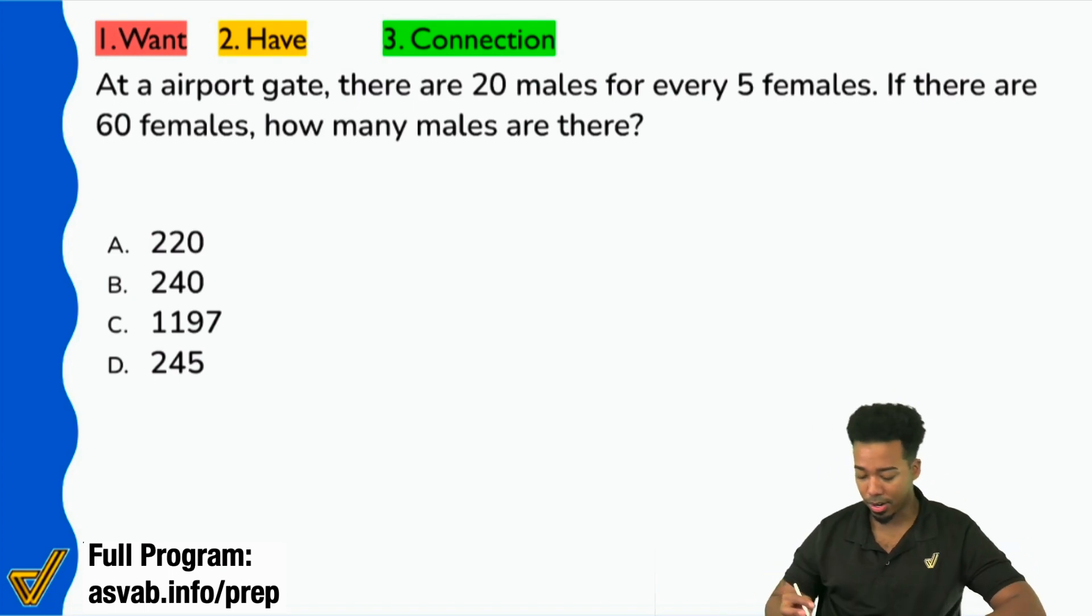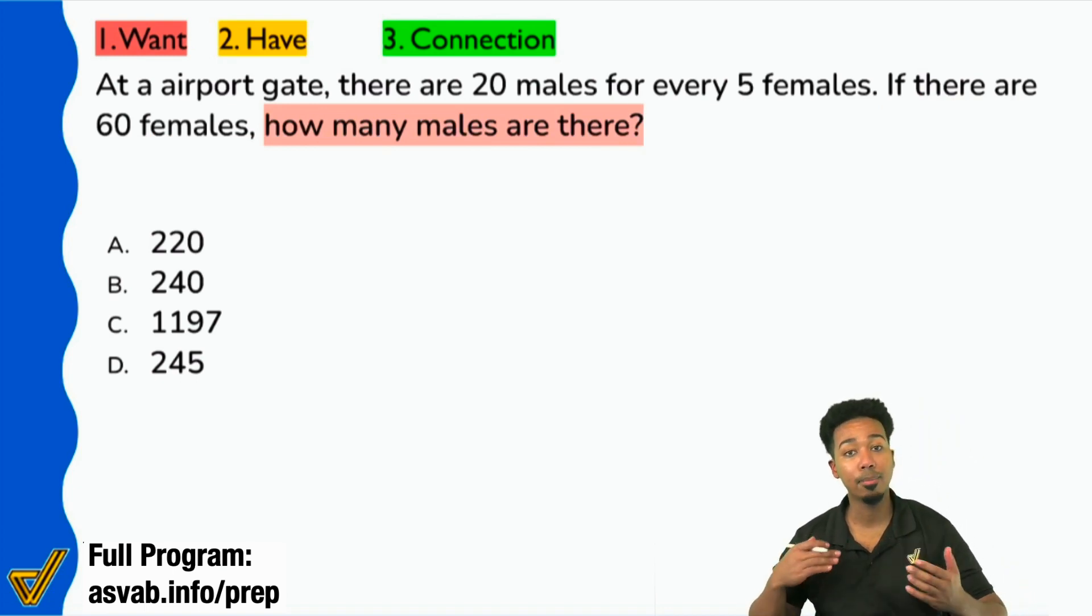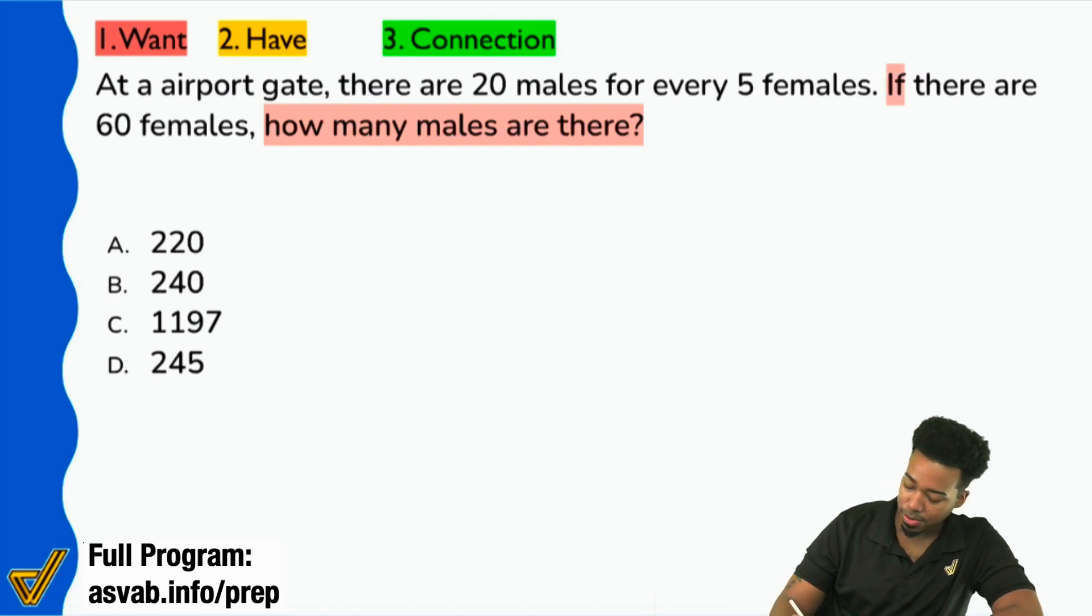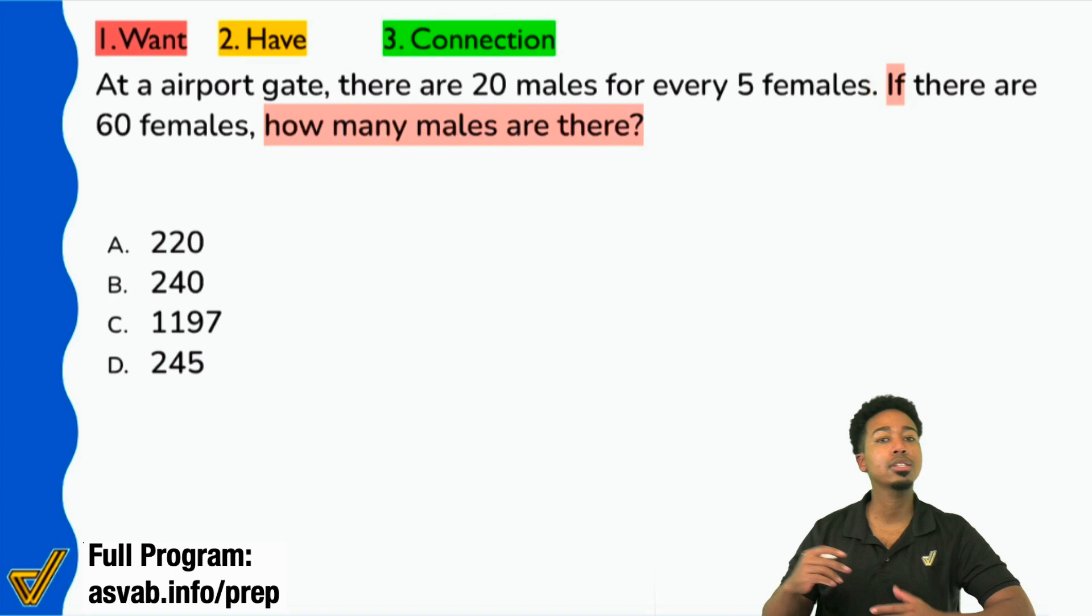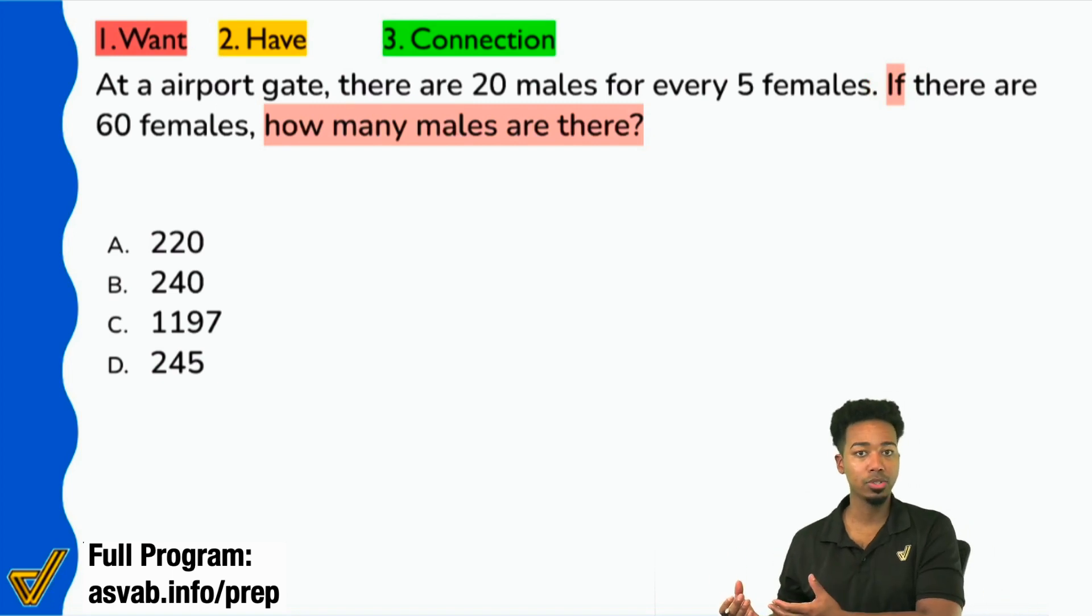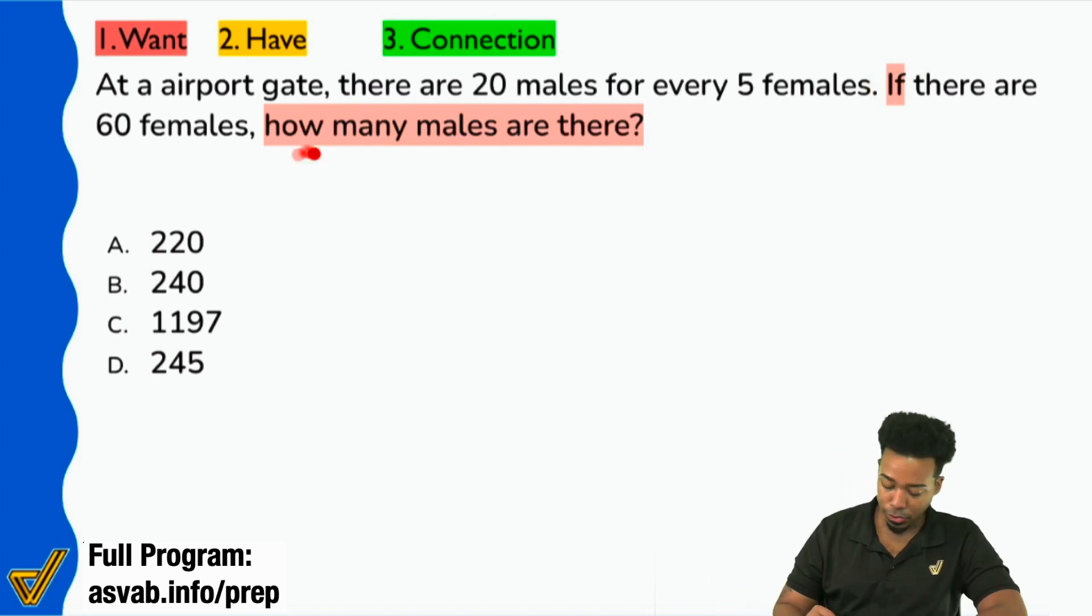So starting off right here, it says, hey, if there are 60 females, here's the question, how many males are there? Again, who, what, when, where, why, how many, which of the following, all that. Those are your question action words. This if right over here, this if, that's giving you information that's connected to the question, but overall, this is your question.